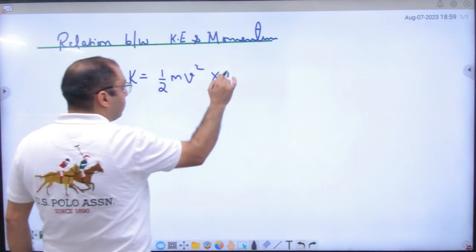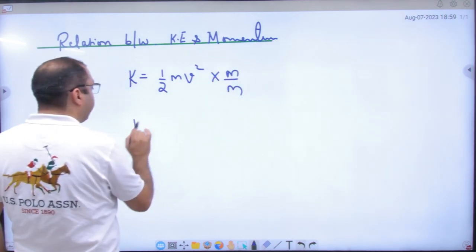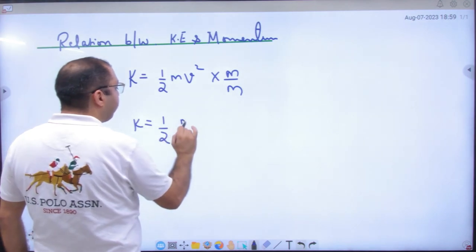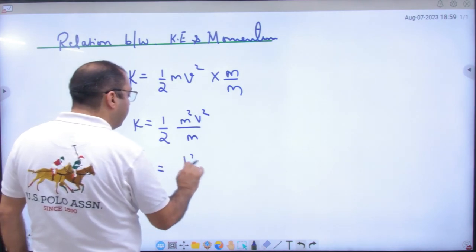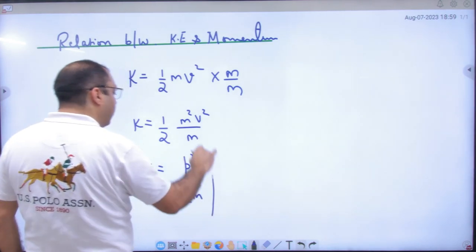So what did I teach? We will divide it by mass. What does it mean? Half m squared v squared by m. m into v is momentum p, so p squared by 2m. This formula is clear.